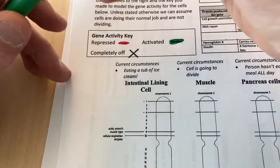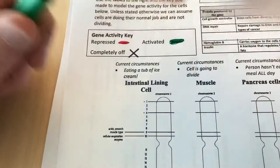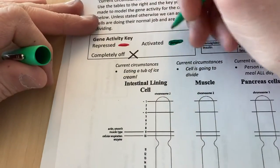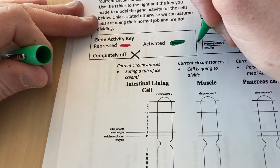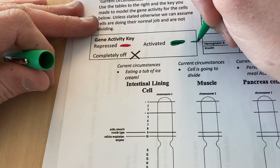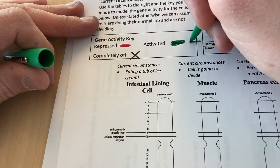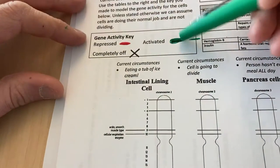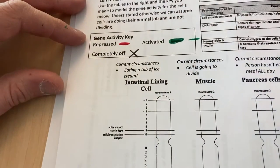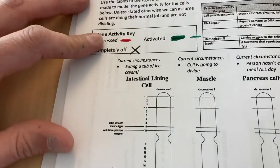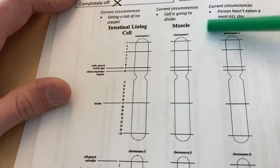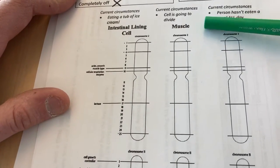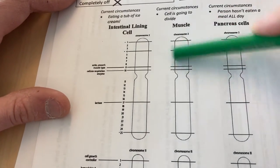If a gene was activated but not being read very much, we could show a faint green. If it's being activated a lot, we could draw a thicker line. Now let's skip over to a muscle cell and look at how we would model what's on and off in a normal muscle cell.